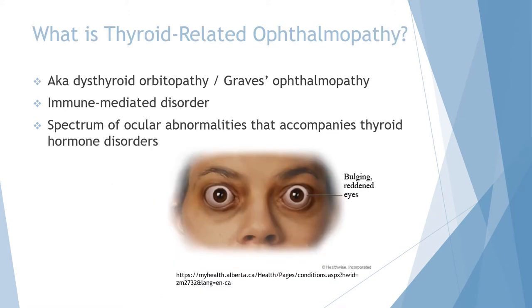Thyroid-related ophthalmopathy is also known as dysthyroid orbitopathy or Graves' ophthalmopathy. This is an immune-mediated disorder and a spectrum of ocular abnormalities that accompanies thyroid hormone disorders, and we will explore this throughout our PowerPoint.